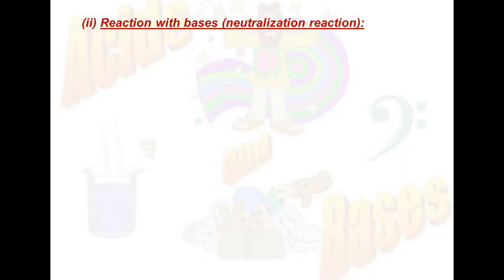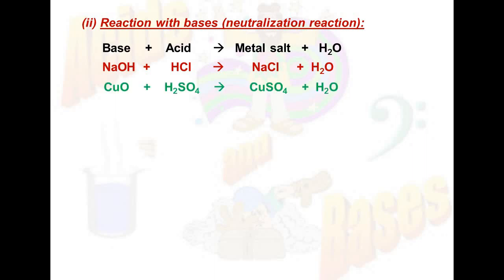Third reaction: reaction with bases, that is the neutralization reaction. When acid reacts with base, the product is always salt plus water, but the bases may be of two types. It may be metal hydroxide or it may be metal oxides. For example, NaOH, which is metal hydroxide, reacts with HCl to form NaCl, which is salt, and H2O, which is water. Similarly, copper oxide, which is a metal oxide and is basic in nature, reacts with sulfuric acid to form copper sulfate plus water.